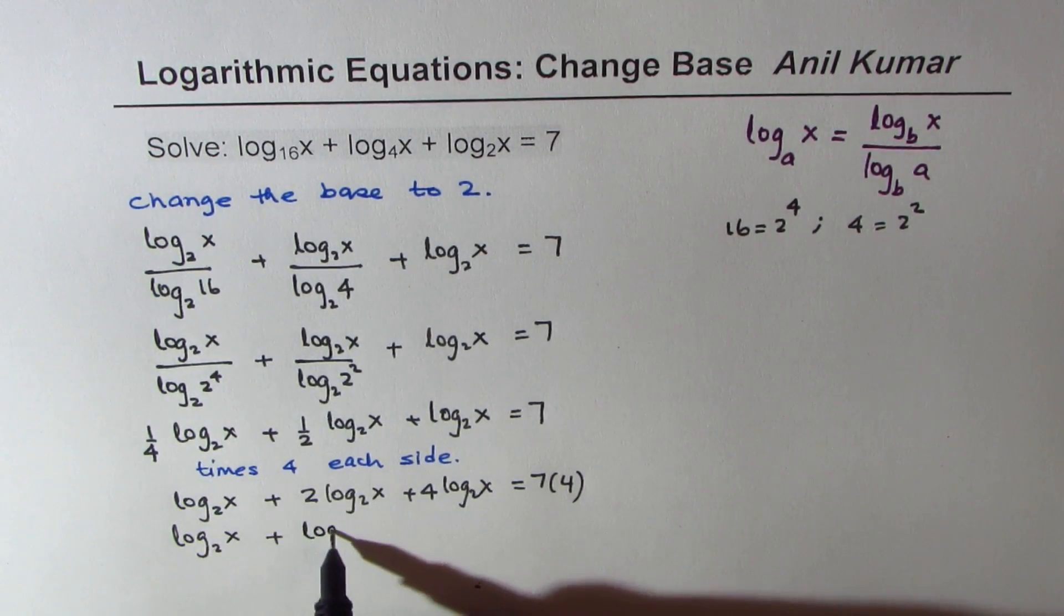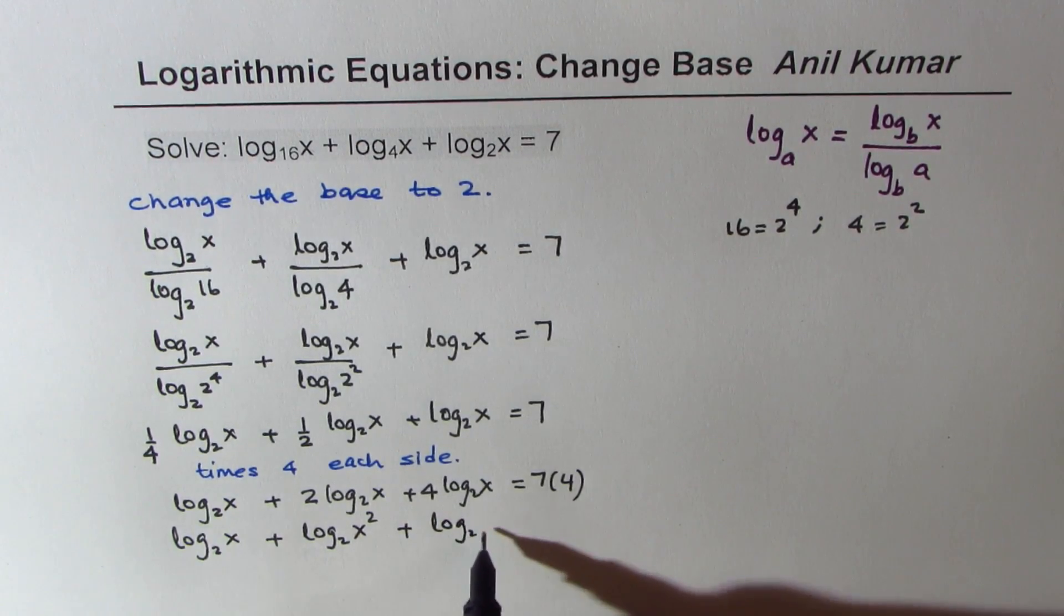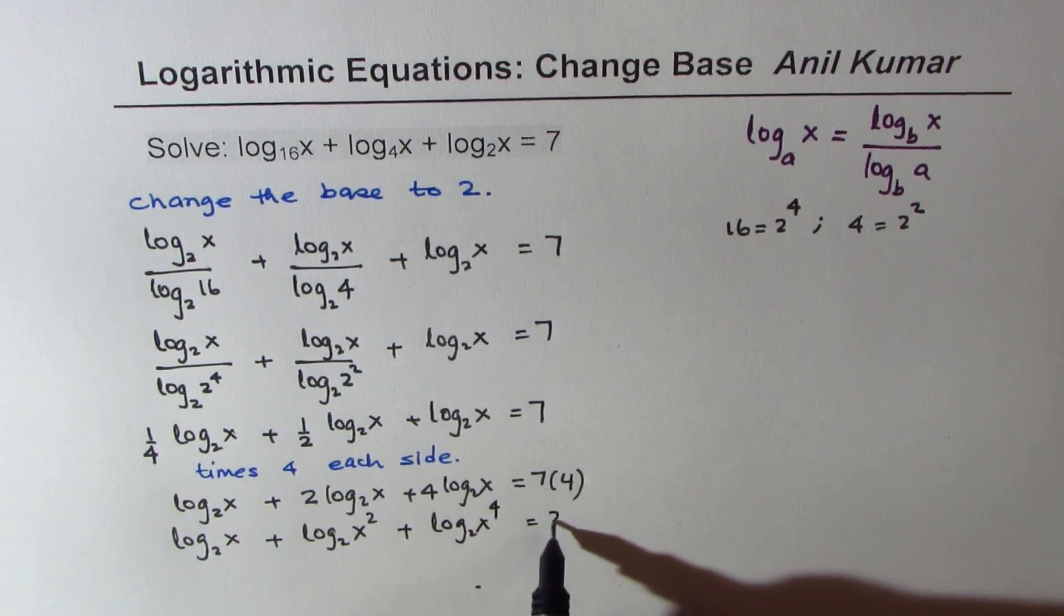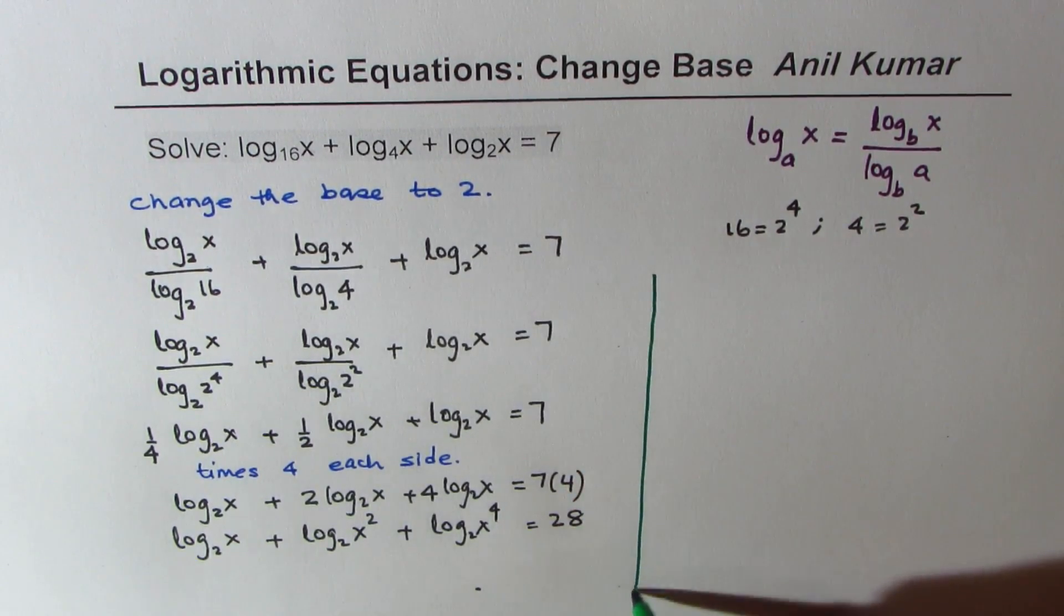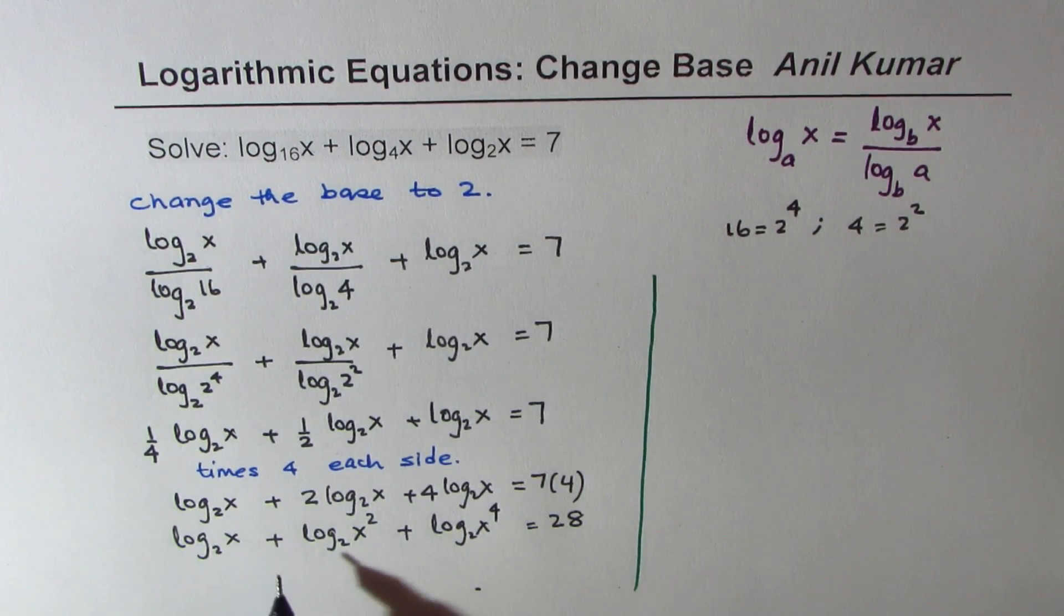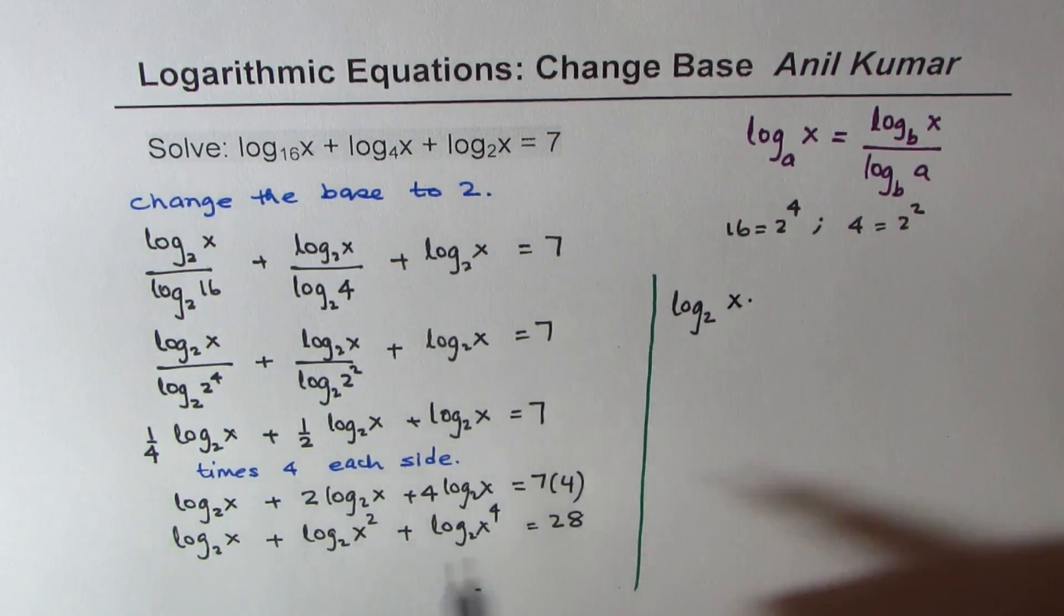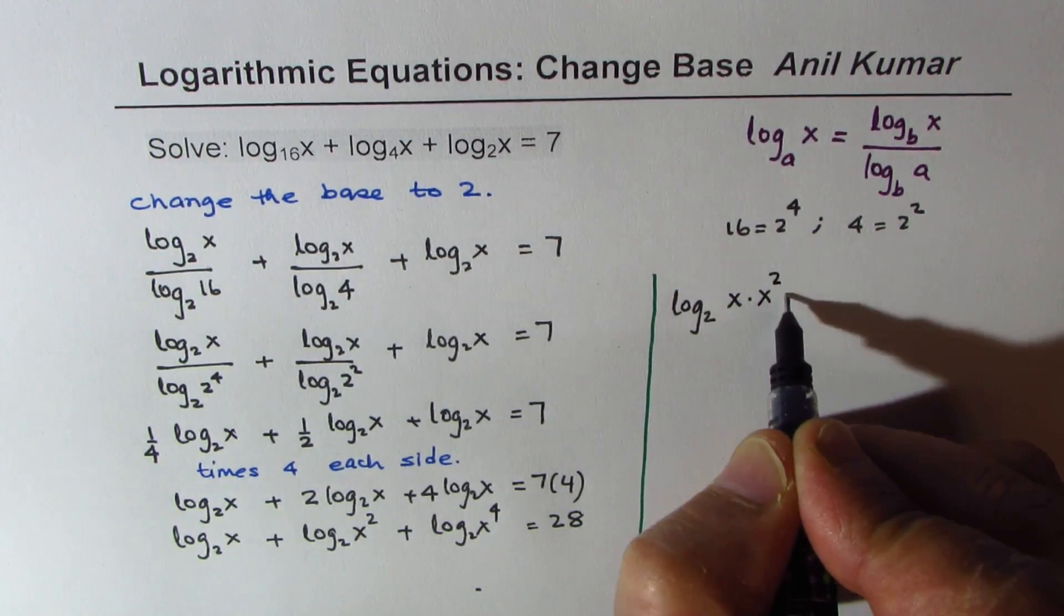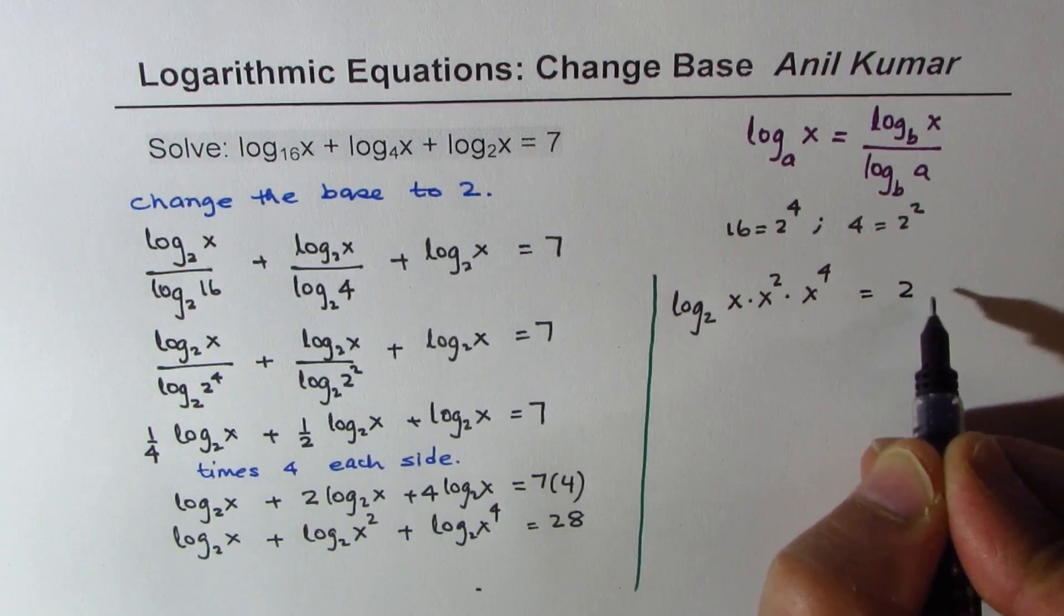This could be written as log base 2 of x squared plus log base 2 of x to the power of 4 equals 28. Applying the logarithmic laws, plus means you just multiply all of them, then you get log base 2 of x times x squared times x to the power of 4 equals 28.